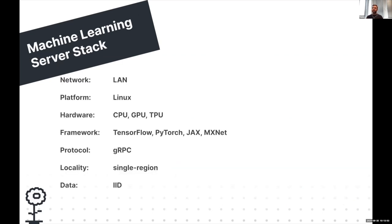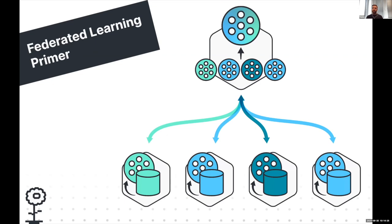If we look at the machine learning stack in our traditional setup, where we do all of the machine learning in the cloud, it's actually quite simple: a Linux machine with some kind of accelerator like a GPU or TPU, high bandwidth connections, and if we train on a cluster of machines, the biggest choice is whether we use TensorFlow or PyTorch.